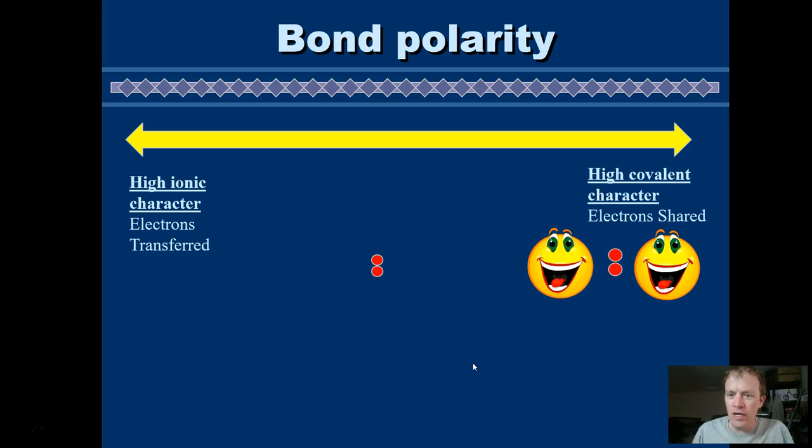So in an ionic bond, what we have is one of our atoms loses possession of their electrons. The other one takes it. And then this guy gets positive, this guy gets negative. And they're going to stick together for that reason. So that would be a high ionic character bond.